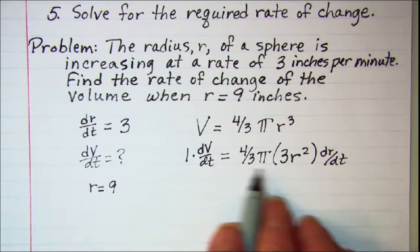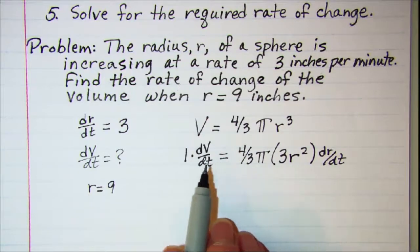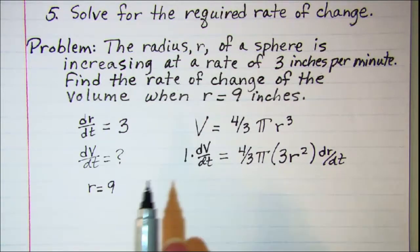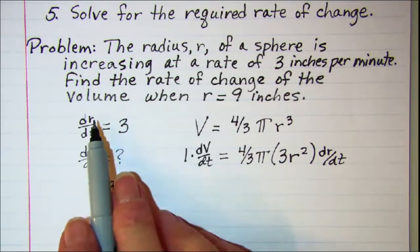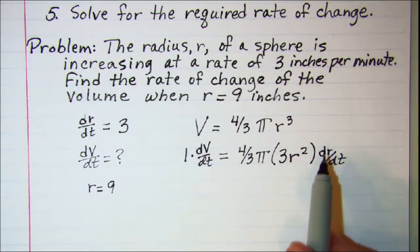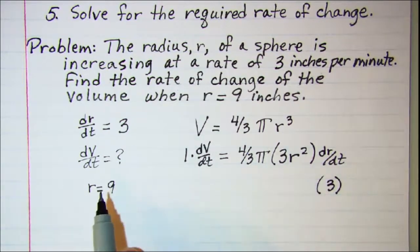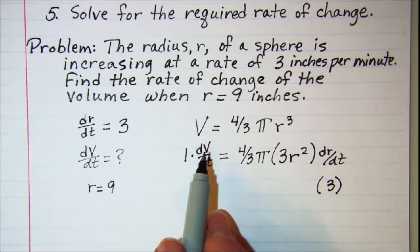Now this is the derivative of our equation. Now that I have the derivative done, I can substitute in values. I know that dr/dt is 3, so that value is right here, let me put that in.